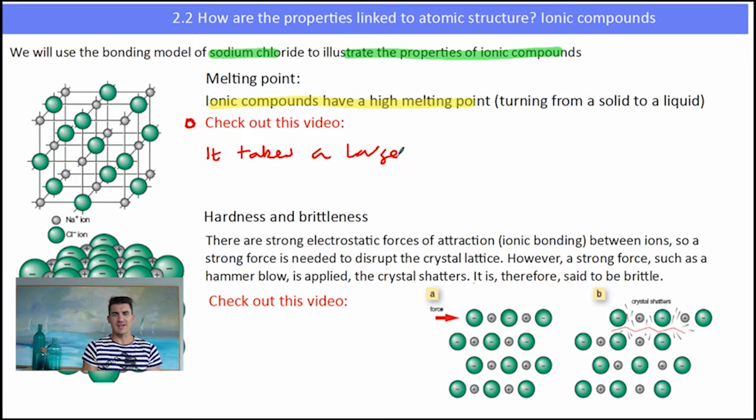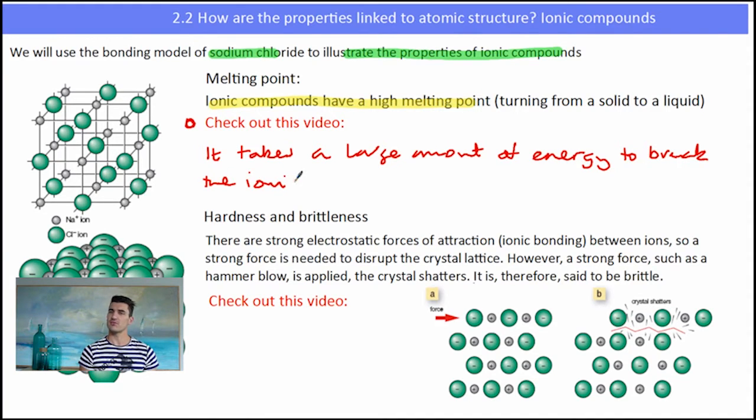So it takes a large amount of energy to turn an ionic compound from a solid into a liquid. We have to heat it on the Bunsen burner for a long period of time into a very high temperature. So that means that the forces between the anions and the cations must be very strong. And we say that the ionic bond is a strong bond. It takes a large amount of force to overcome that electrostatic attraction. The force here is the heat.